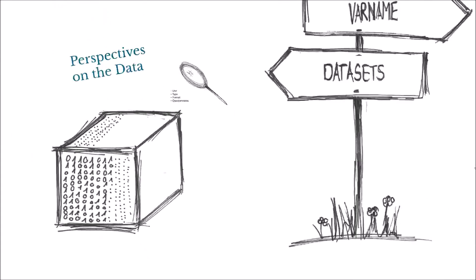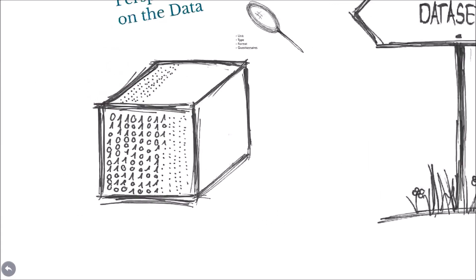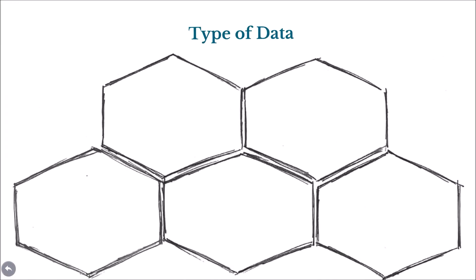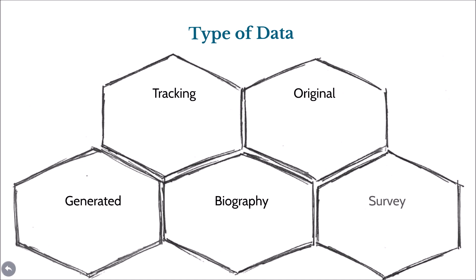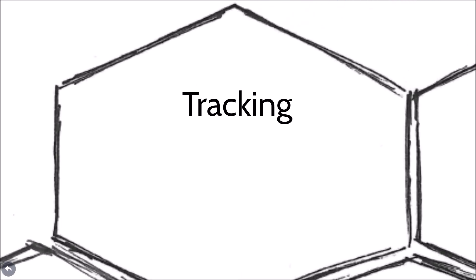Next, datasets can be distinguished by the type of data they contain. There are tracking datasets, original datasets, generated datasets, biographical datasets, and datasets containing survey information.